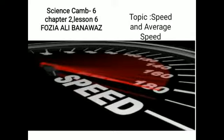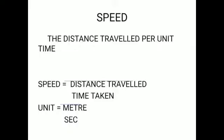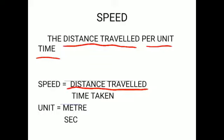Today we will know how speed can be calculated. Today's topic is speed. It is defined as the distance traveled per unit time — how much distance is covered per unit of time. Its formula is: speed can be calculated by dividing distance traveled by time taken. We divide the distance covered by the time consumed.